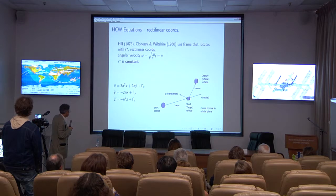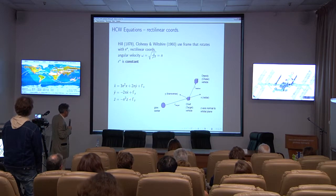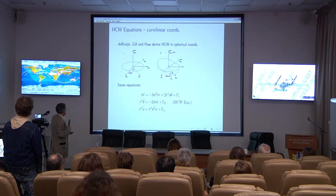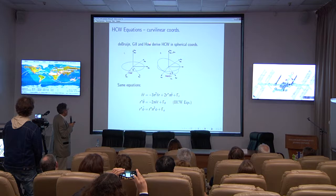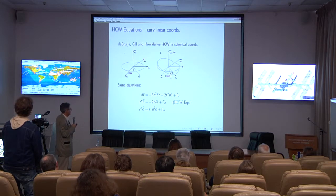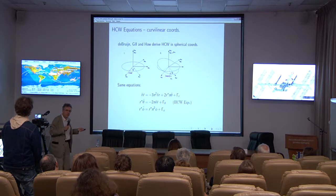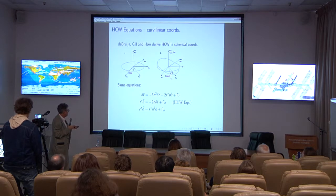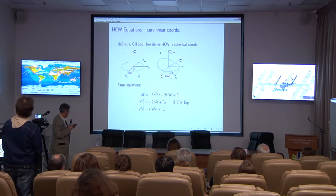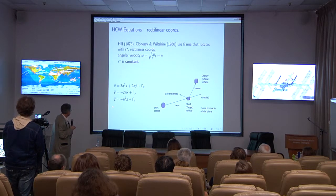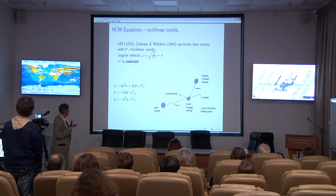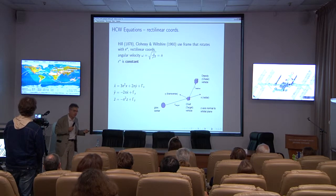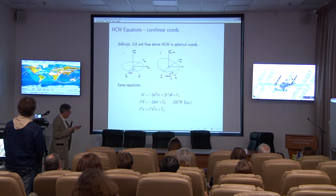R-star is constant, and the linearized equations look like this. In recent times, De Bruin, Gill, and Howell derived the HCW equations in fully spherical coordinates. It was known before this that instead of using rectilinear coordinates, you could replace the Y coordinate with the radius of the target vehicle times an angular coordinate. But generally people left the Z component as a rectilinear out-of-plane, solving in cylindrical coordinates. It's much better to do it in spherical coordinates — with R, theta, and phi — giving the HCW equations in spherical form. This had been proposed earlier by Raul Vidali and Terry Alfriend.